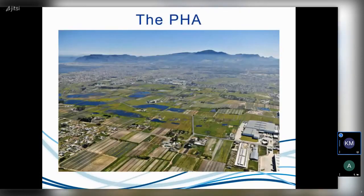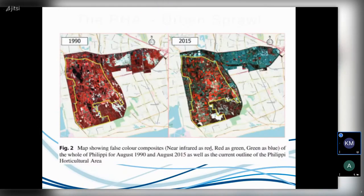This is also an aerial photograph of the PHA with the mountains in the background. You can see on the periphery how urbanized it has become, but also with lots of farms and dams in the area. It's a beautiful place, but with increasing urbanization, unfortunately, and that's really the core of what we want to look at.